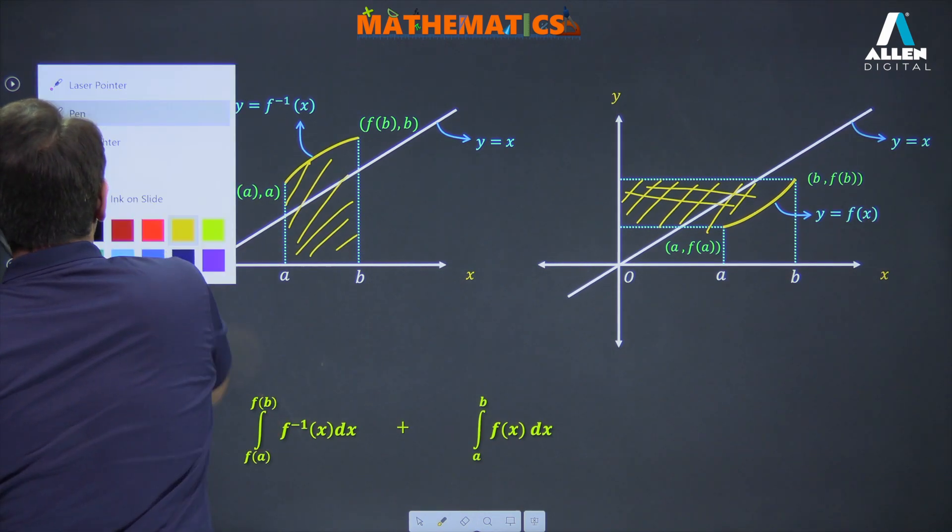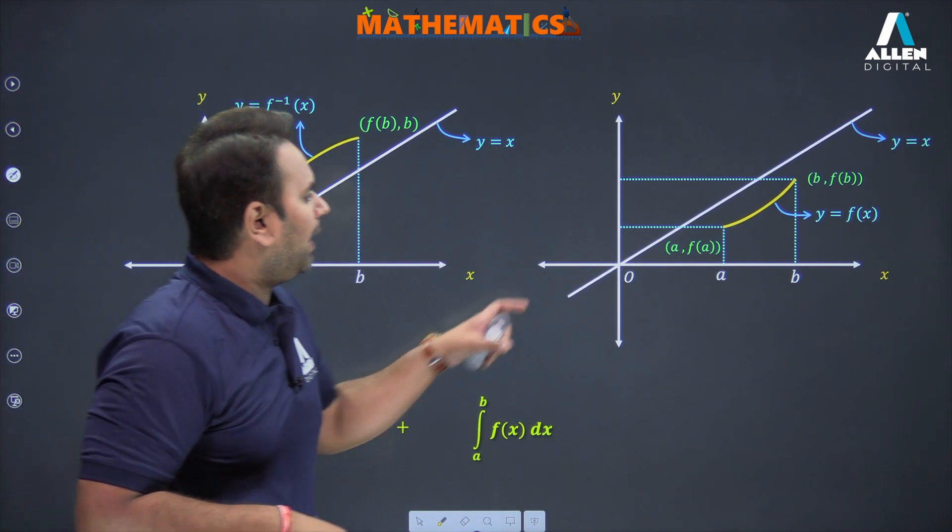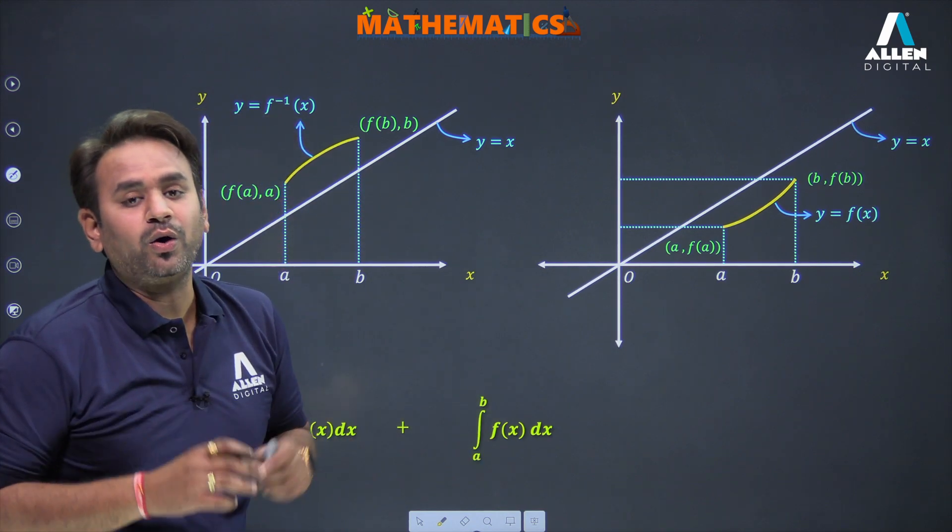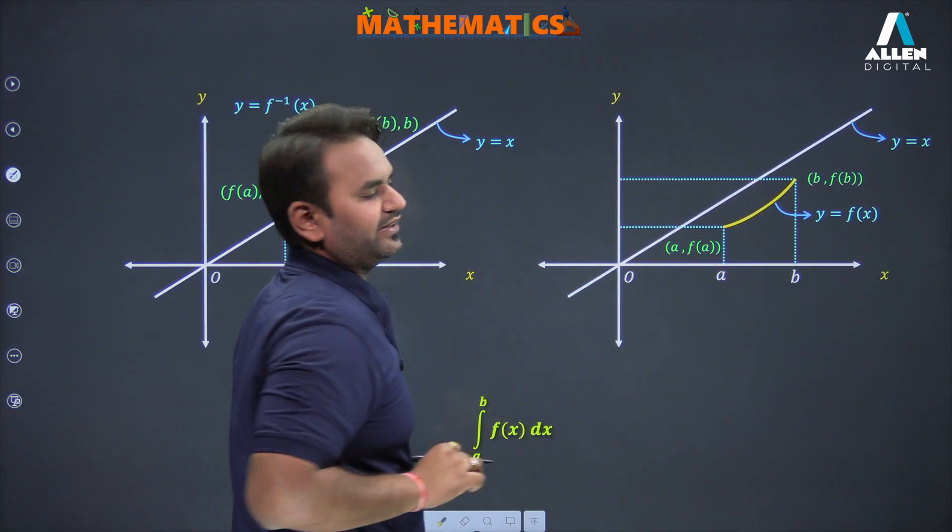Now what happened? Let me delete all this. You'll understand this point. What I want is this area plus this area. If I need both areas, which is the sum of both integrals, how will we calculate it? We'll subtract the smaller rectangle from the larger rectangle.